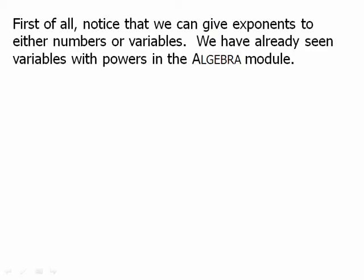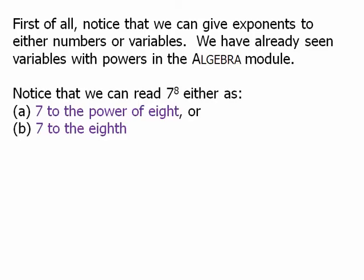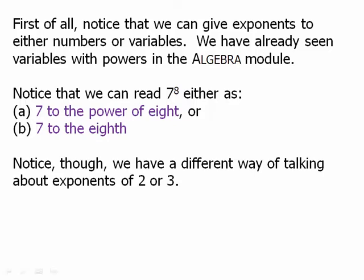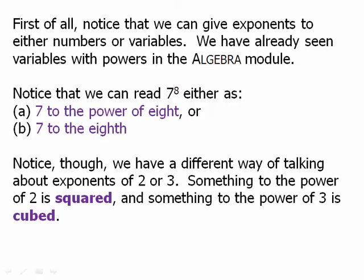First of all, notice that we can give exponents to either numbers or variables. We have already seen variables with powers in the algebra module, especially in the videos on quadratics where you have x squared. Notice that we can read that expression either as 7 to the power of 8 or 7 to the 8th. Either one of those is perfectly correct. Notice that we have a different way of talking about exponents of 2 or 3. Something to the power of 2 is squared and something to the power of 3 is cubed. We would rarely say something to the power of 3 and we would never say something to the power of 2. That just sounds awkward. We would always say that thing's squared.